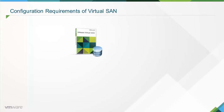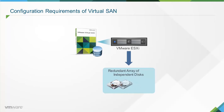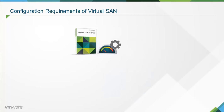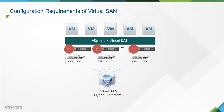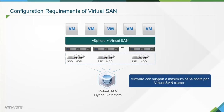Virtual SAN is a cluster-level feature integrated with VMware ESXi to create a distributed redundant array of independent disks, or RAID. To configure a Virtual SAN, a group of ESXi hosts are grouped into a cluster. Virtual SAN combines local storage devices dispersed across multiple hosts and presents them as a single data store. At least three ESXi hosts in the Virtual SAN cluster must contribute local storage, and this local storage must be a combination of one SSD and one or more HDDs. VMware can support a maximum of 64 hosts per Virtual SAN cluster.